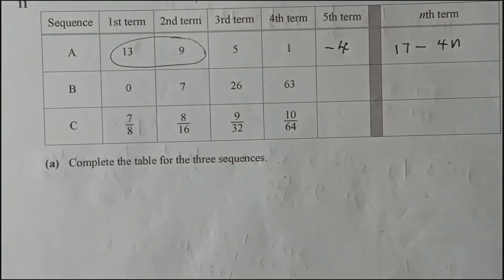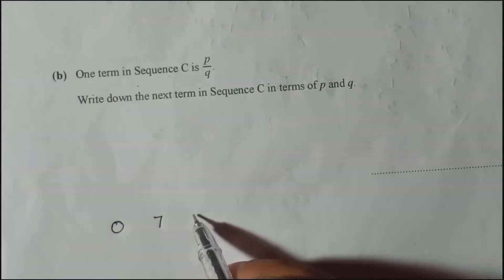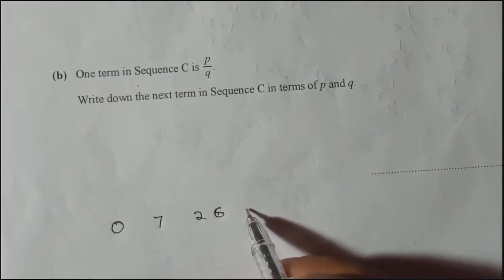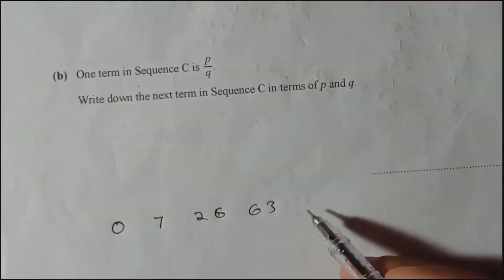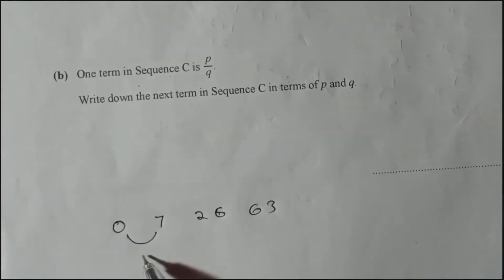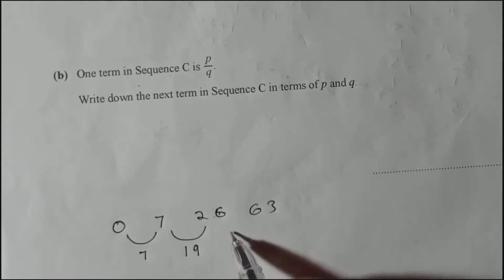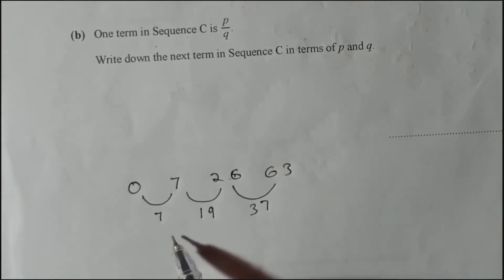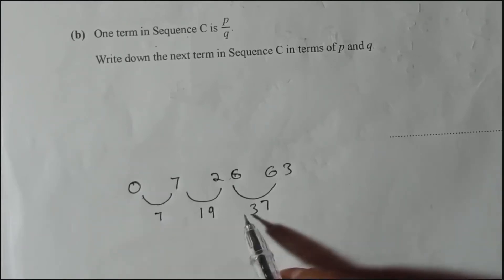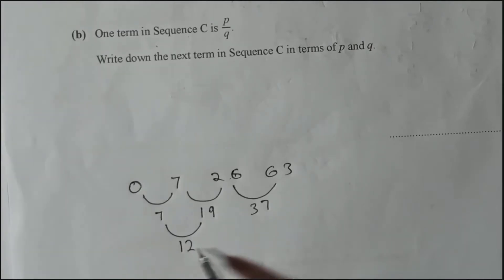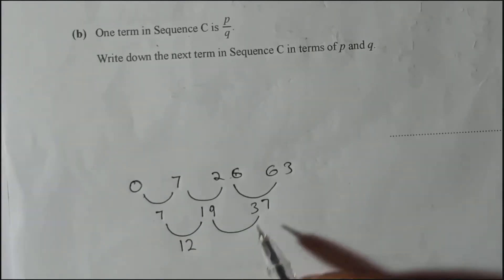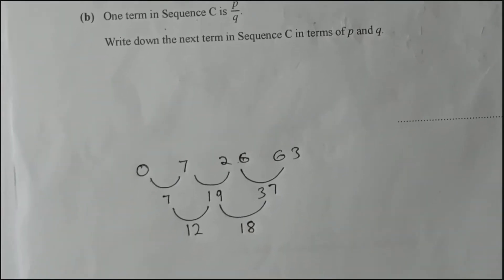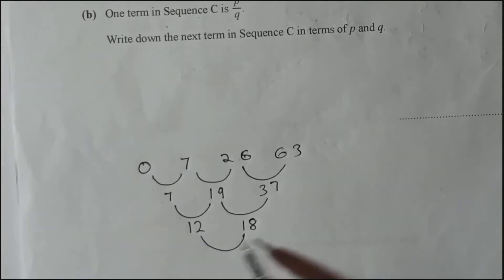To find that, I will write these four terms — 0, 7, 26, 63 — and we need to find the nth term and the fifth term. Let's write the first differences: 7 minus 0 is 7, 26 minus 7 is 19, 63 minus 26 is 37. Now the second differences: 19 minus 7 is 12, and 37 minus 19 is 18. Still no common difference.